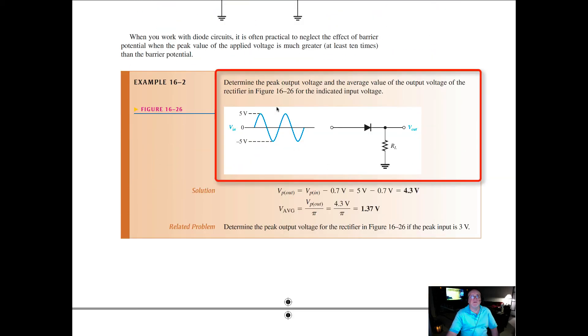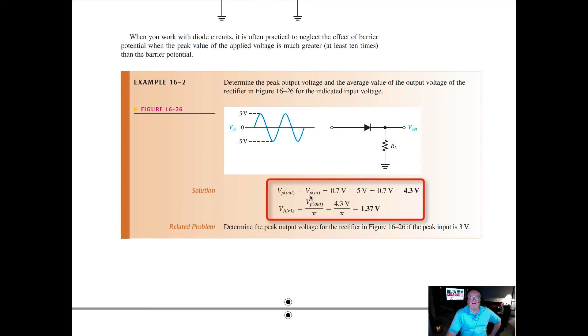In this example, determine the peak output voltage and the average value of the output voltage of the rectifier. In this case, we've got a five-volt peak on the input. When we do the math, Vpeak out equals Vpeak in minus seven-tenths. So five volts minus seven-tenths gives us 4.3 volts. That seven-tenths is relevant in this case.